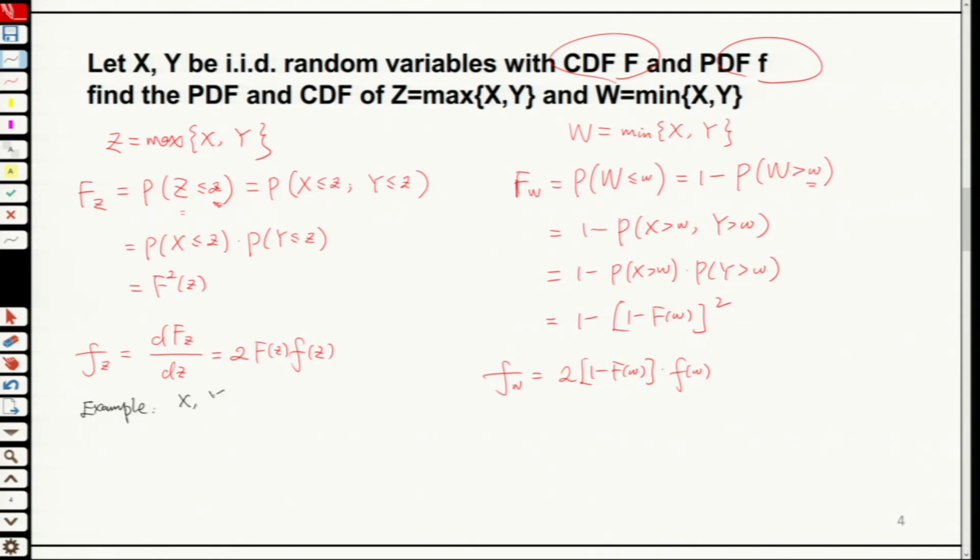Suppose you have X and Y. Both of them are exponentially distributed. Then what is f? f(t) will equal to lambda exponential minus lambda t. What is F(t)? F(t) will equal to 1 minus exponential minus lambda t.